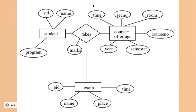The student ID will be underlined as the primary key. For the course, the course number will be underlined. The section number is not needed as a key — the course number is the key. For the examination, there will be a unique examination ID. The first name and last name can be derived as a composite attribute, and the phone number can be a multi-valued attribute.